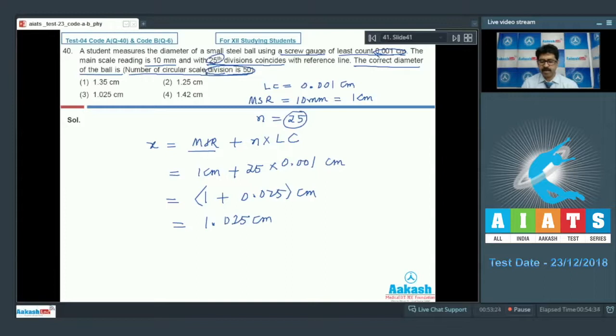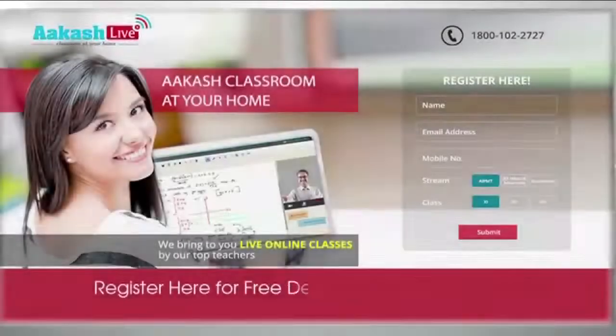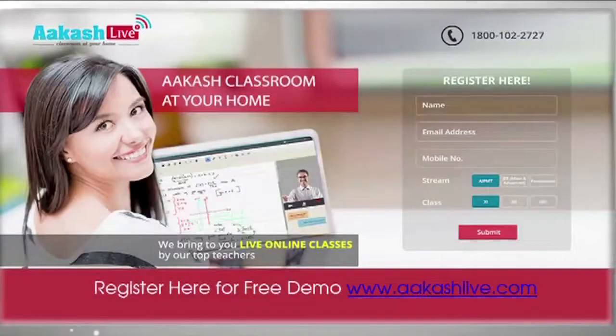Here you have no role of total divisions, because already least count is mentioned and coincidence is mentioned. So in this equation there is no use of total divisions. Okay? So correct option is option number 3.